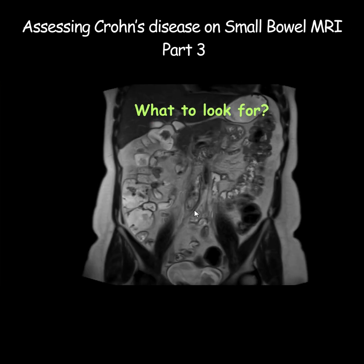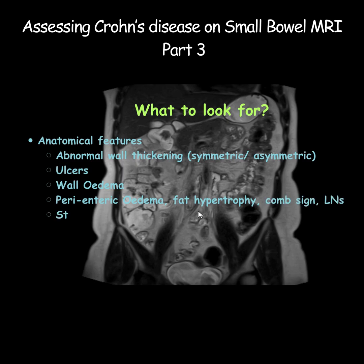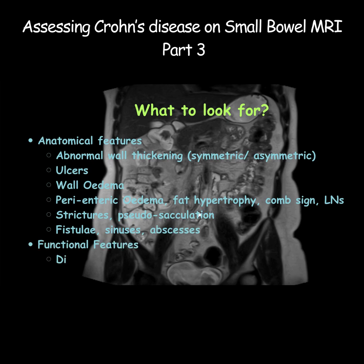So what do we assess in Crohn's disease? We look for both anatomical and functional signs of pathology. By anatomical or physical signs, I mean any abnormal bowel wall thickening, segmental narrowing, pre-stenotic dilatation, any mural edema or perienteric edema, any abnormal vascular engorgement, fat hypertrophy, lymphadenopathy. And by functional, I mean presence of diffusion restriction.